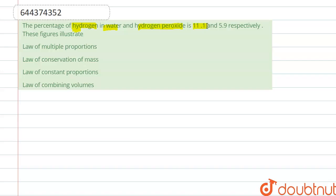The percentage of hydrogen in water and hydrogen peroxide is given as 11.1 and 5.9 respectively. These figures illustrate H2O and H2O2 peroxide.